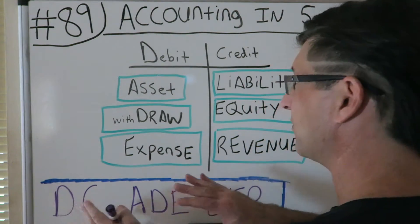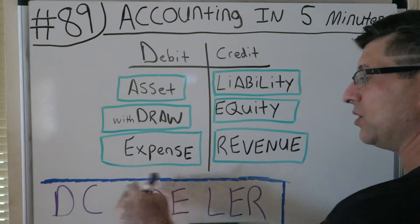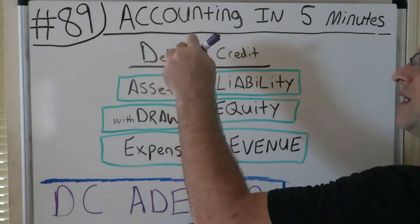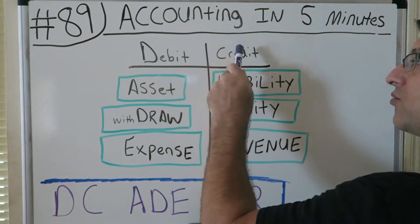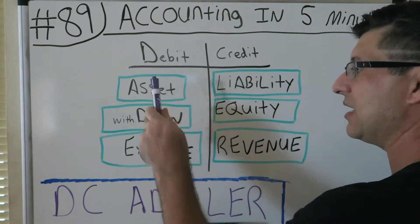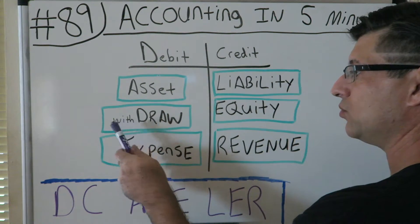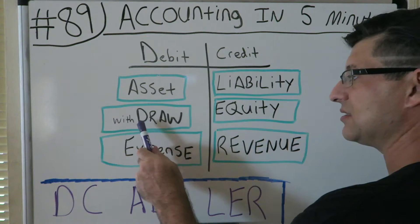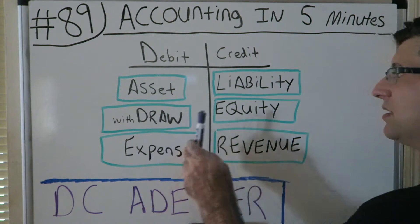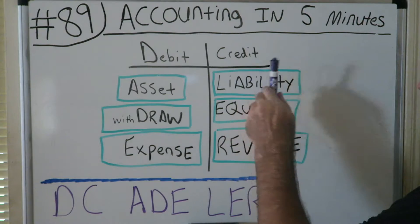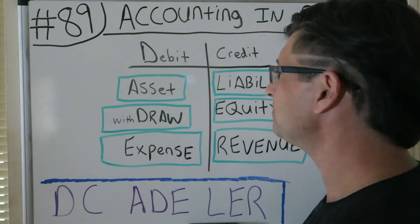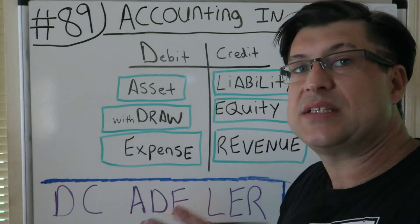Once you can write it down — DC ADER — you're gonna write up here: Debit, Debit, Credit. DC AID: Asset, Draw, Expense on the debit side, and on the credit side: Liability, Equity, Revenue.